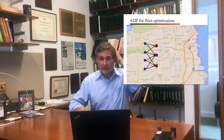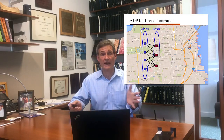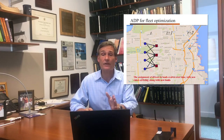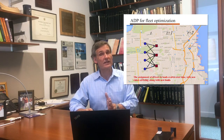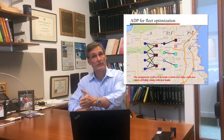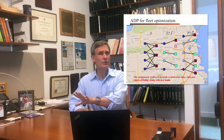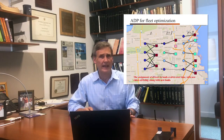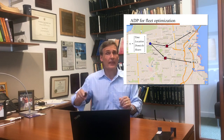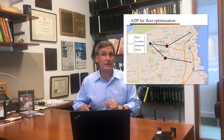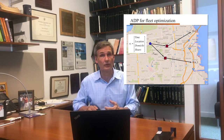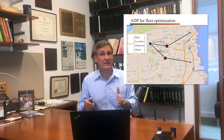Here's how we extend to a fleet. We have a set of drivers and loads and we must assign drivers to loads — this is an assignment problem. Over time, drivers enter and leave the system, new loads come in, and we make sequential assignments. For one truck looking at two loads, we take the downstream values, add them to the contribution earned from that initial assignment, and we have a simple assignment problem. Scaled to an entire fleet, this becomes a network problem, also called a linear program.